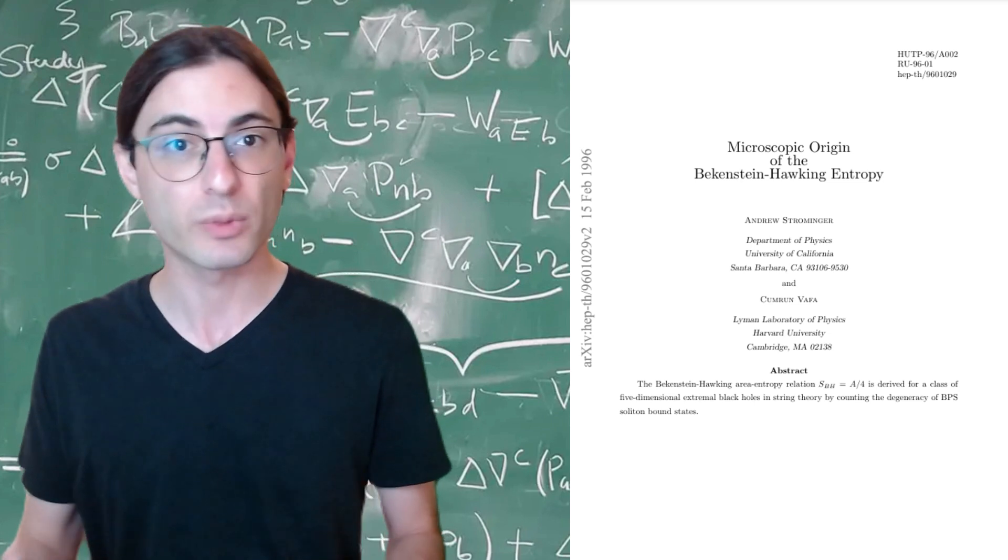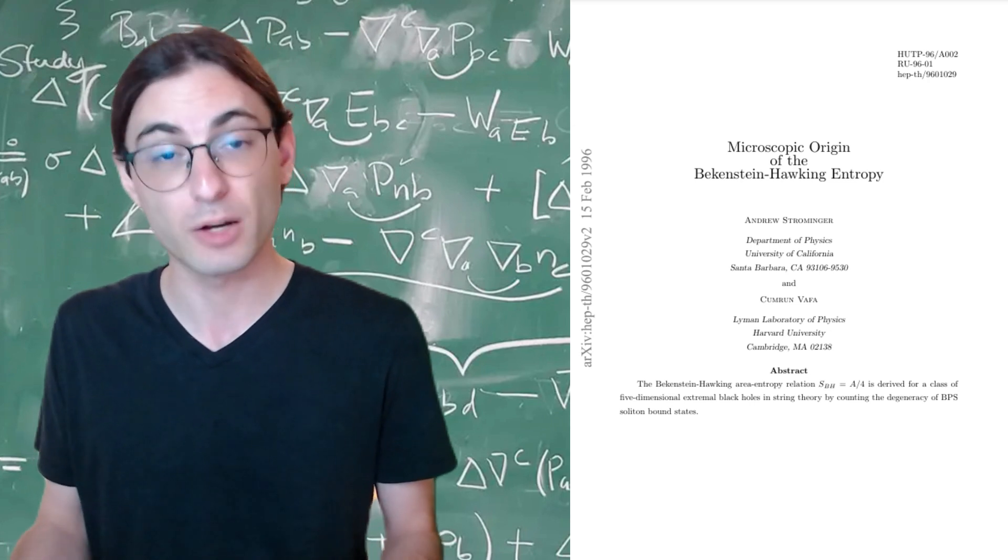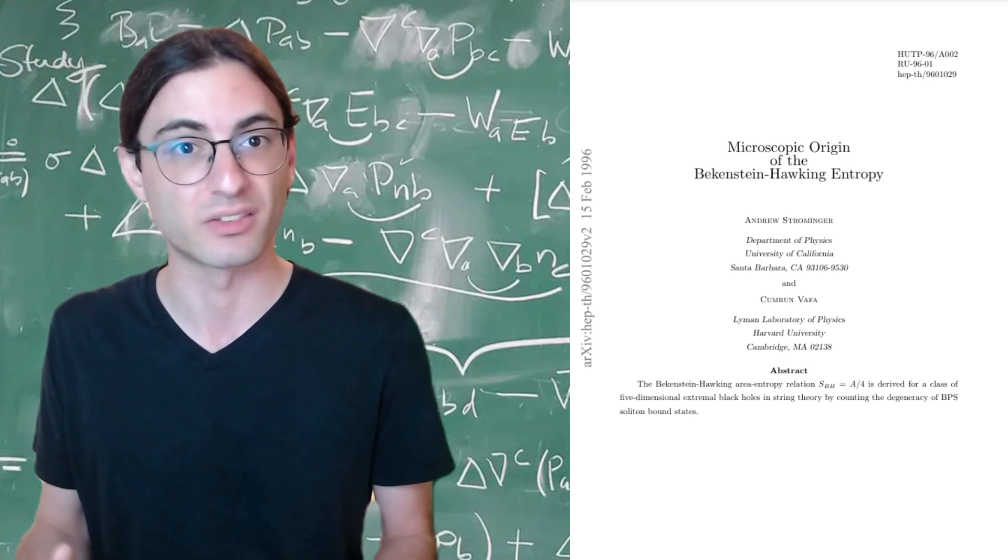And we've done so. One of the reasons loop quantum gravity theorists have a slight inferiority complex is because it's not clear that their pet theory is capable of reproducing the Bekenstein-Hawking entropy.